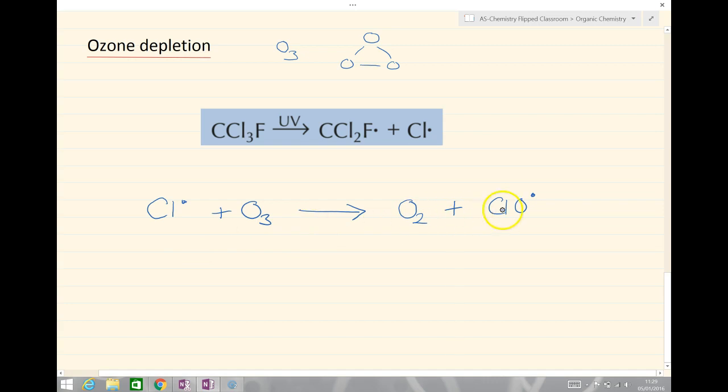And this chlorine oxide radical is still reactive and will react with another ozone molecule and this again forming oxygen, in fact makes two of them plus the chlorine radical.